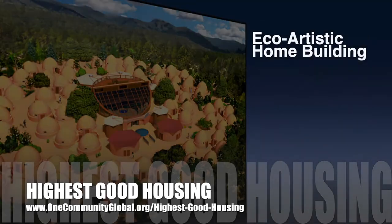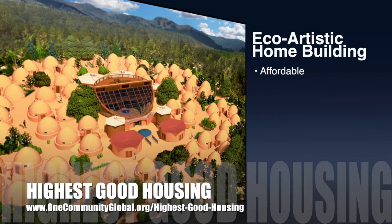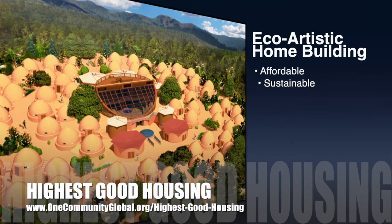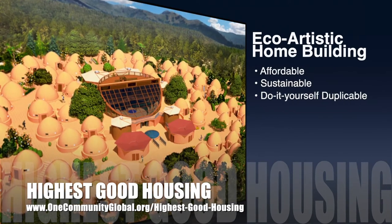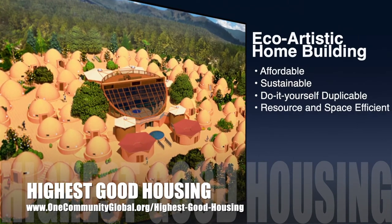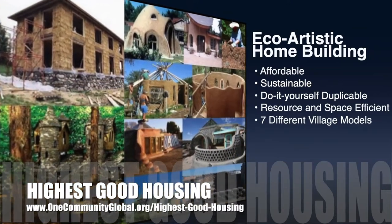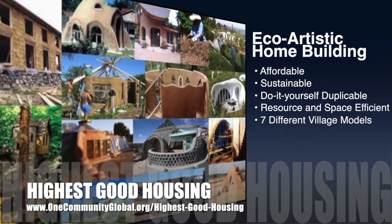The One Community approach to highest good housing is eco-artistic home building that is affordable, sustainable, do-it-yourself duplicable, resource and space efficient, and consists of seven different sustainably constructed village models.